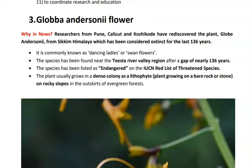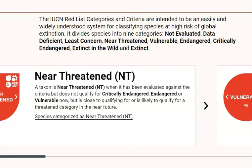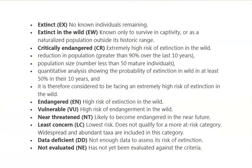The IUCN Red List is a system for classifying species at high risk of global extinction. There are nine criteria categories. The first is Extinct — the animal is no longer found anywhere. The second is Extinct in the Wild — the species survives only in captivity or zoos (ex-situ conservation) but is gone from natural habitats.